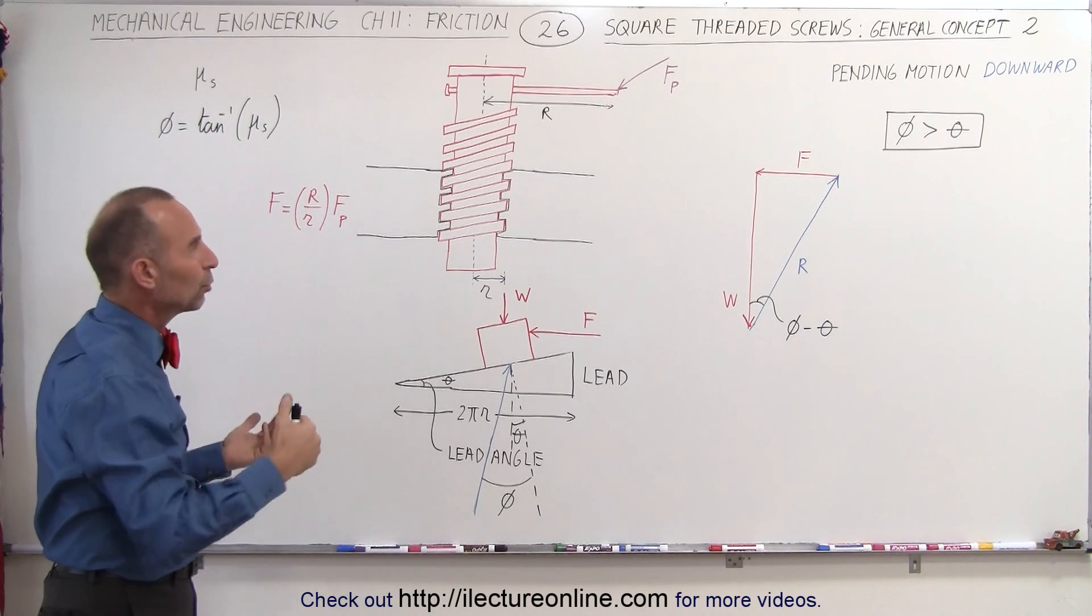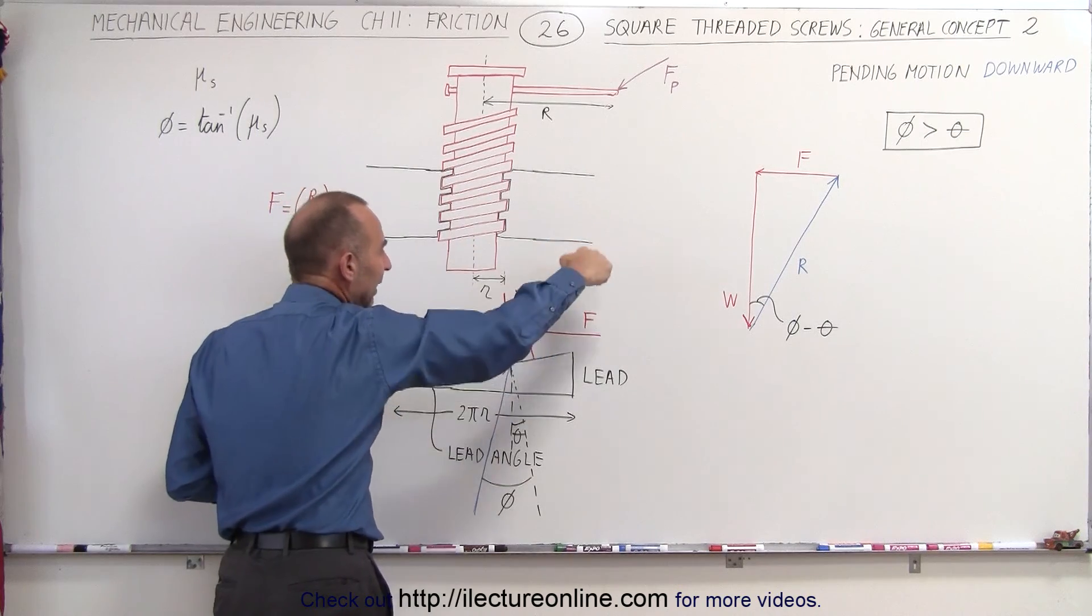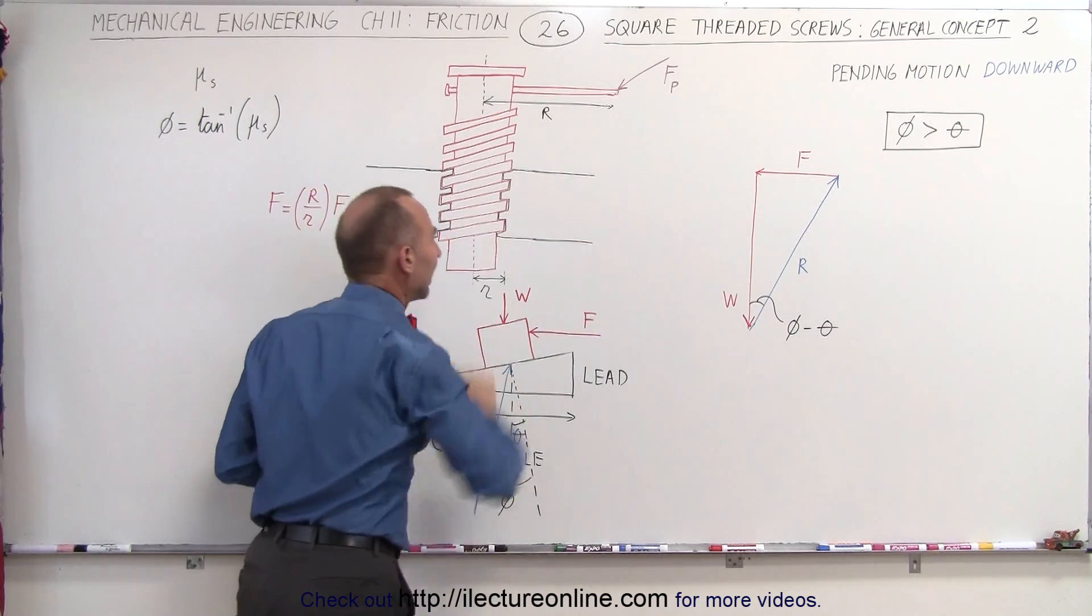And so that would be the case in which we're trying to get the screw to go downward, both with the help of the weight of the screw and the force applied at the end of the handle there.